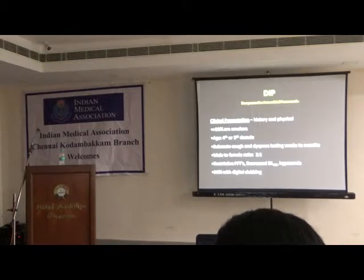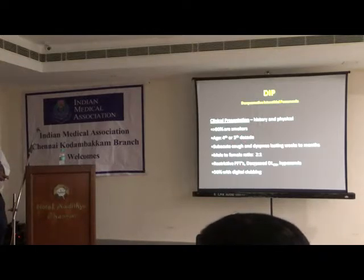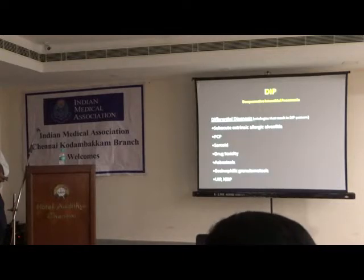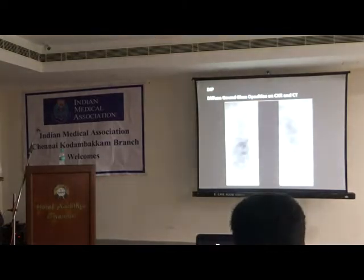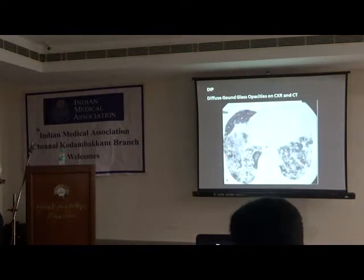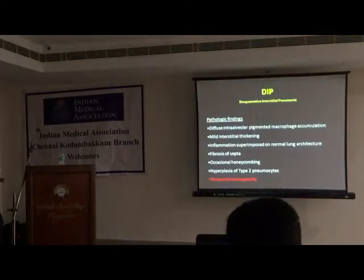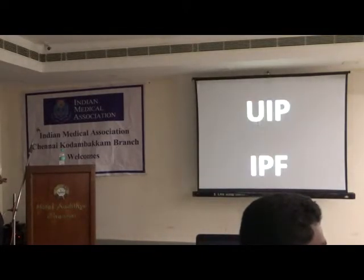Desquamative interstitial pneumonia (DIP) is the next one. Again it is found mostly in smokers, in the fourth or fifth decade. It produces restrictive PFTs, and some patients have digital clubbing. It produces changes very similar to other diseases. You can see the kind of diffuse ground glass opacity with a little bit of fibrosis, and again we find temporal homogeneity in the evolution of fibrosis.